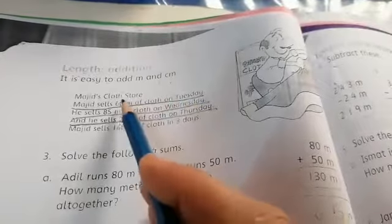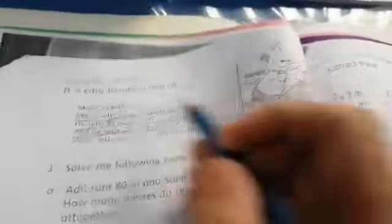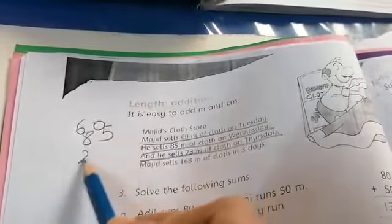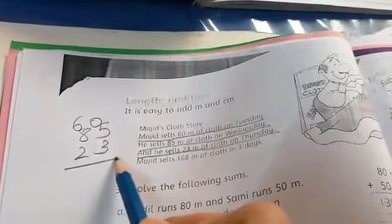So what we do? We will add these 3 meters. What are these? 60, 85 and 23. Add these.